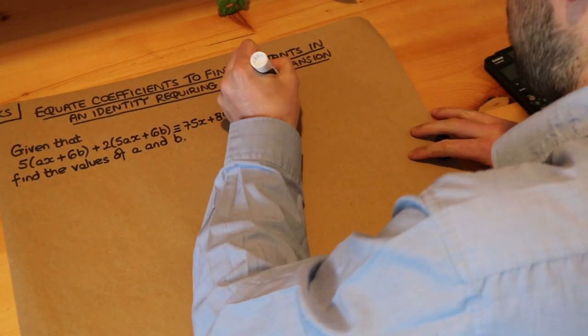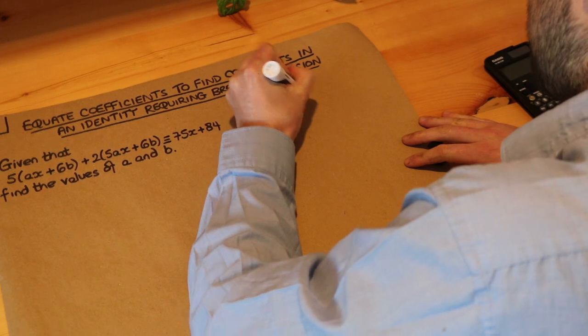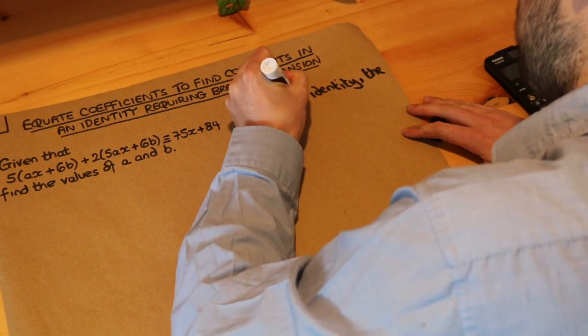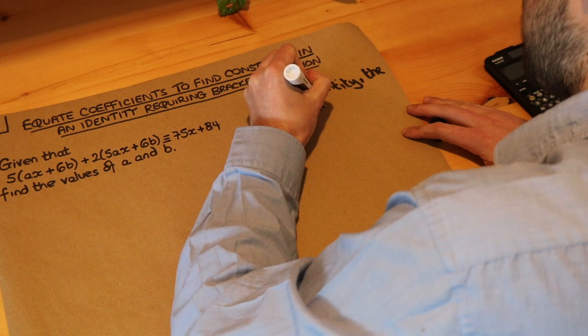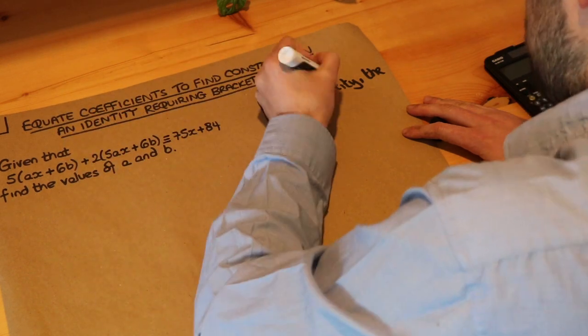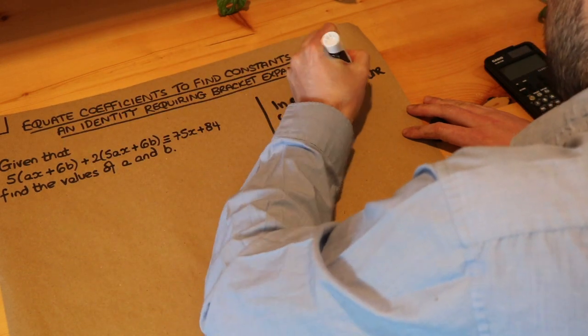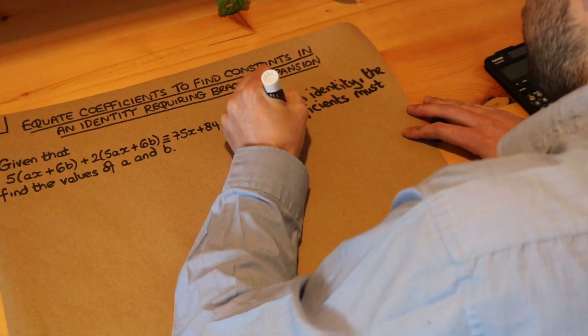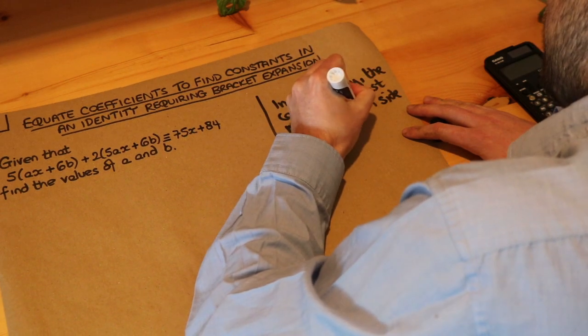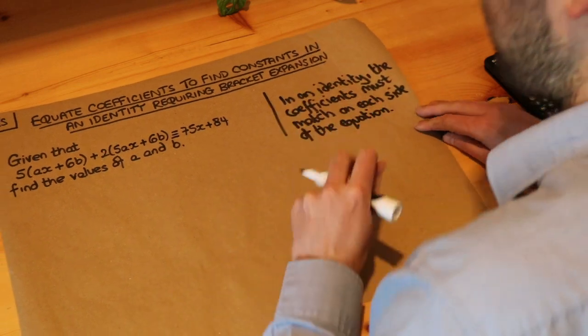So let's just remind ourselves that in an identity the coefficients, and by coefficients I mean the numbers in front of the x term or the constant terms as well, the coefficients must match on each side of the equation.